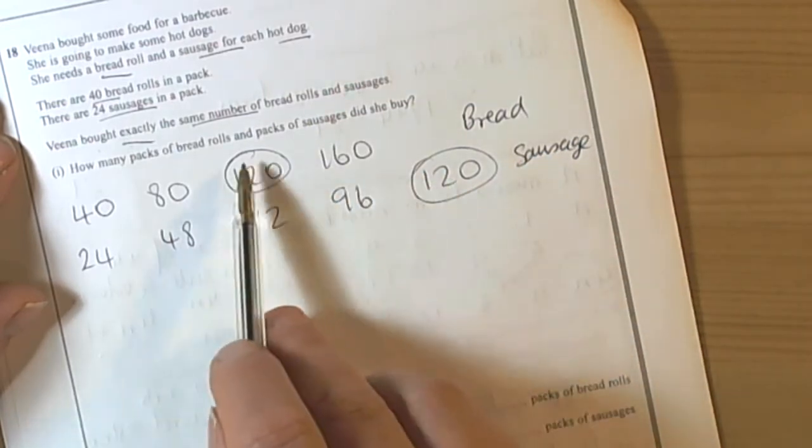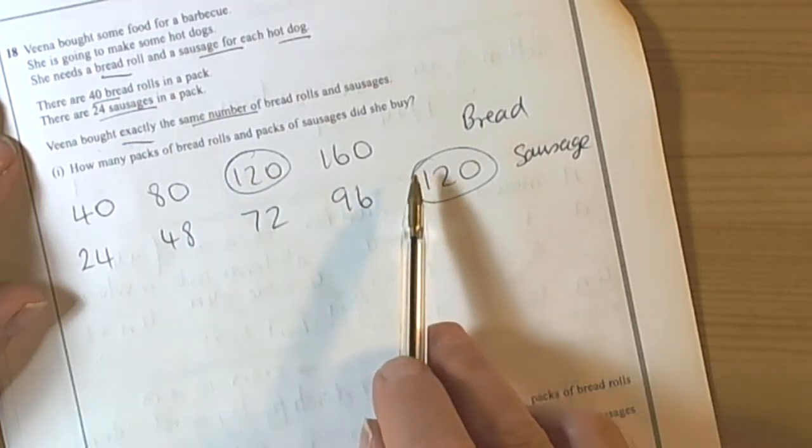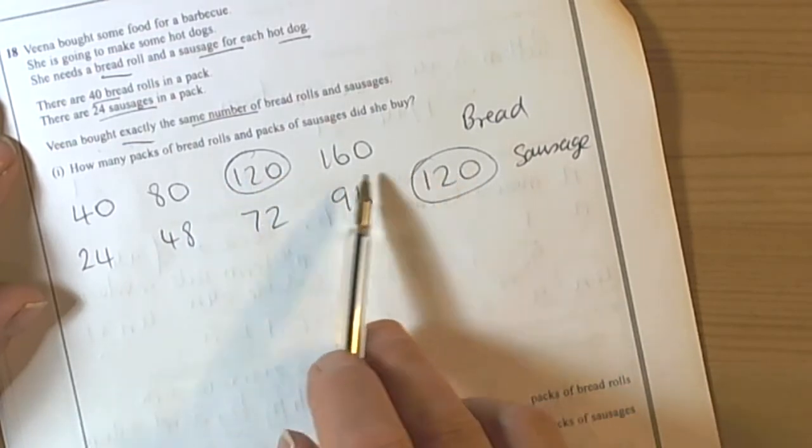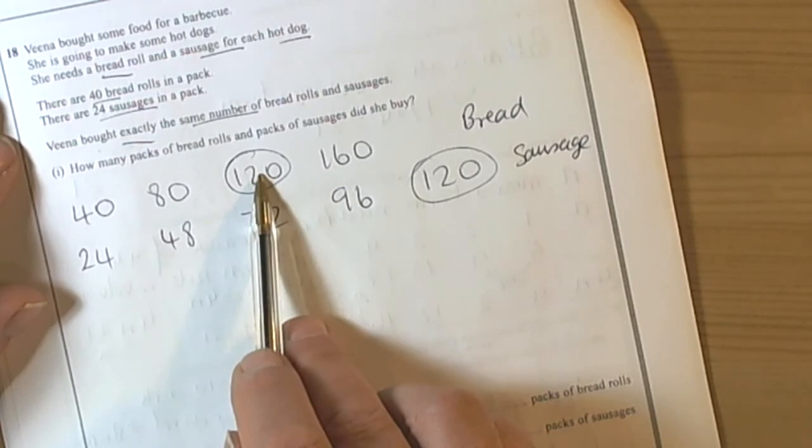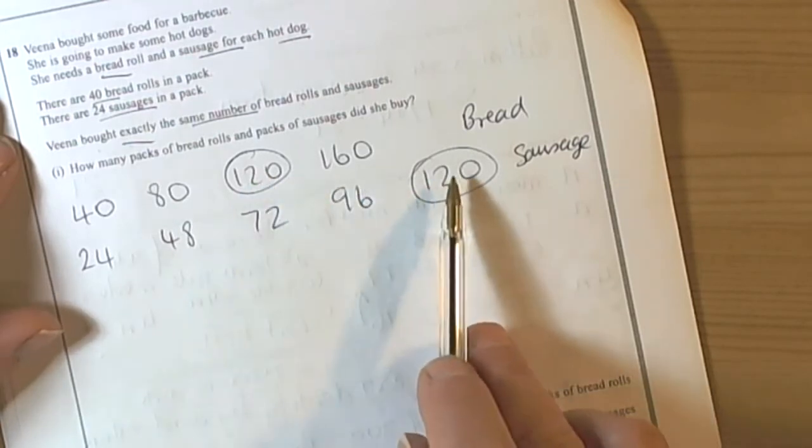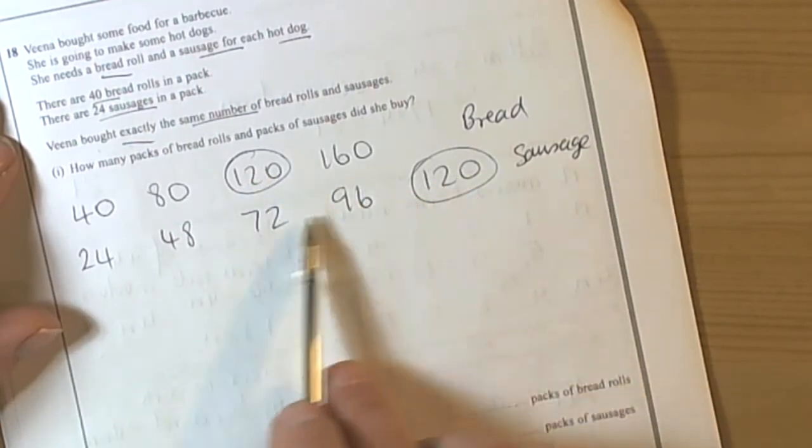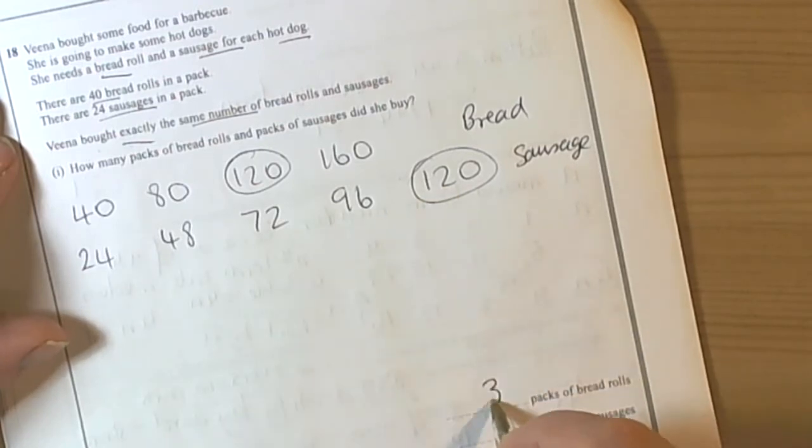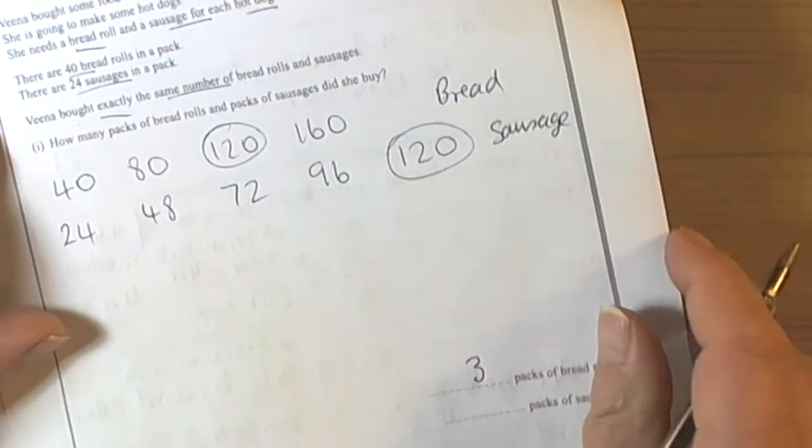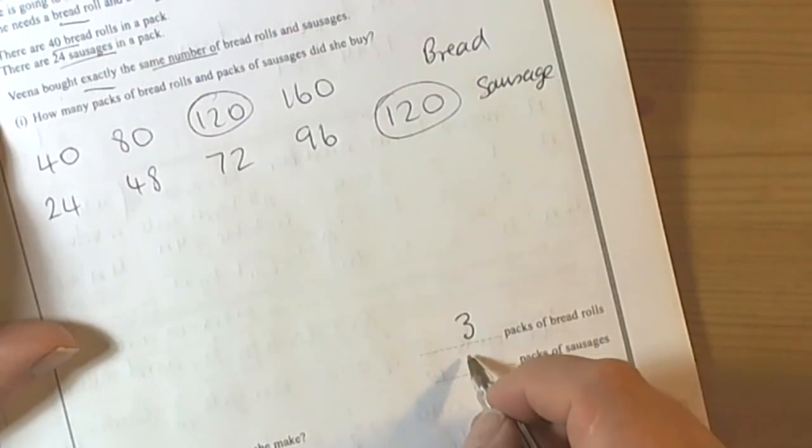So she had the same number of bread rolls and the same number of sausages was 120 so she needed 3 packs of bread rolls and 5 packs of sausages. 1, 2, 3, 4, 5 so it's 3 packs of bread rolls and 5 packs of sausages.